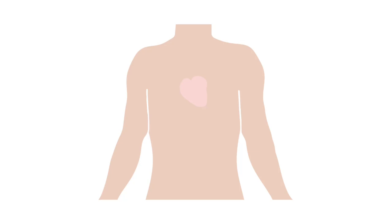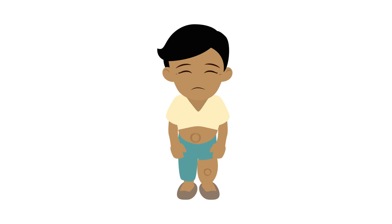As a result, blood will pool in the right ventricle, the inferior and superior vena cava, and all of the veins around the body, leading to significant swelling of the legs, abdomen, and other areas of the body.